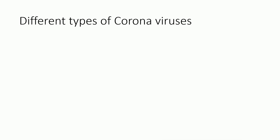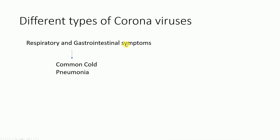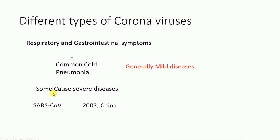There are several different types of coronaviruses. These coronaviruses cause respiratory and gastrointestinal symptoms such as the common cold and pneumonia, and are generally mild diseases. However, some coronaviruses cause severe diseases, such as Severe Acute Respiratory Syndrome (SARS) coronavirus identified in 2003 in China, and Middle East Respiratory Syndrome (MERS) coronavirus identified in 2012 in Saudi Arabia.